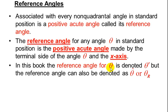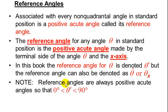In our book the reference angle for theta is denoted theta prime, other books use theta with a caret on the top or theta sub r. They all mean reference angles. Remember a reference angle is a positive acute angle so it must lie between 0 and 90 degrees.